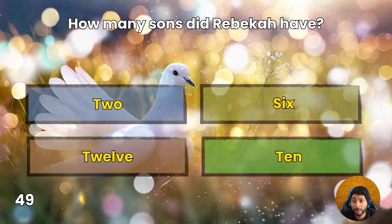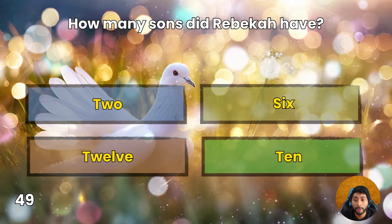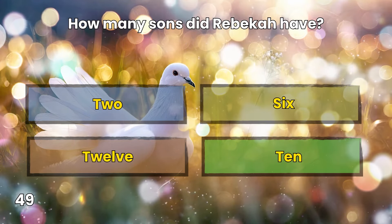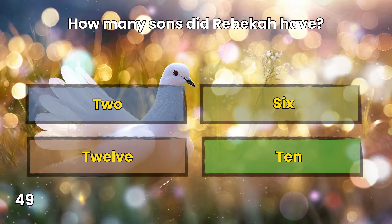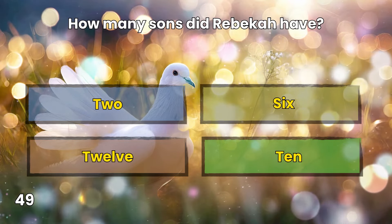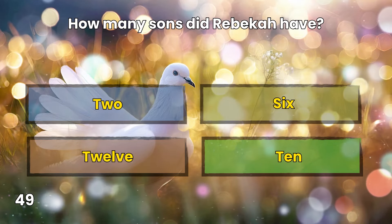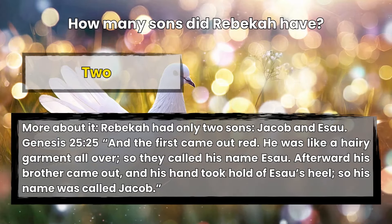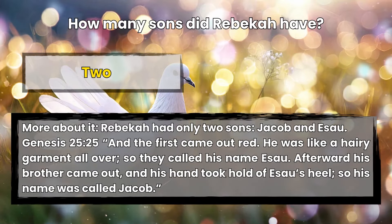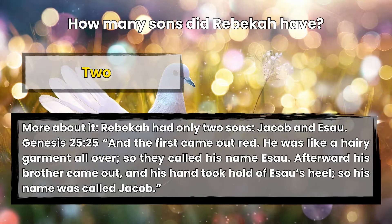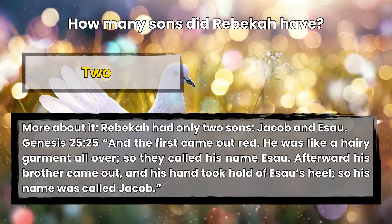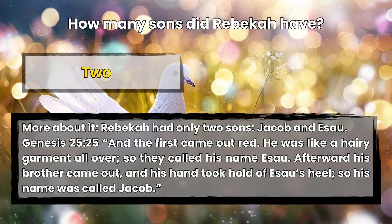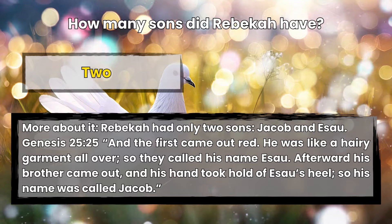Question 49: How many sons did Rebekah have? 2, 6, 12, or 10? Two. Genesis 25:25 — And the first came out red. He was like a hairy garment all over, so they called his name Esau. Afterward his brother came out, and his hand took hold of Esau's heel, so his name was called Jacob.